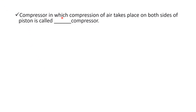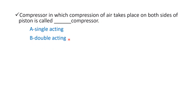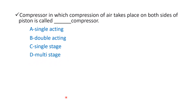Next question: a compressor in which compression of air takes place on both sides of the piston is called blank compressor. Option A: single acting, Option B: double acting, Option C: single stage, Option D: multi-stage. The right answer is Option B — double acting.